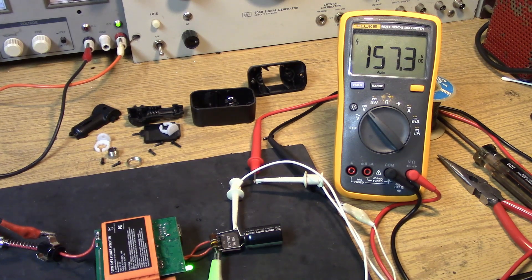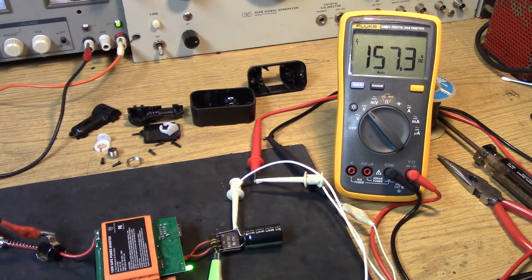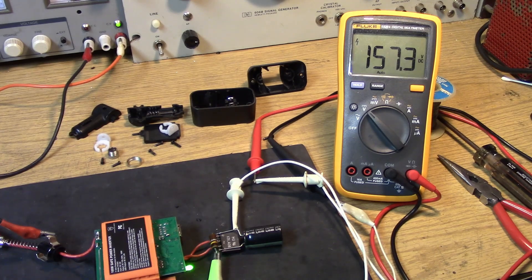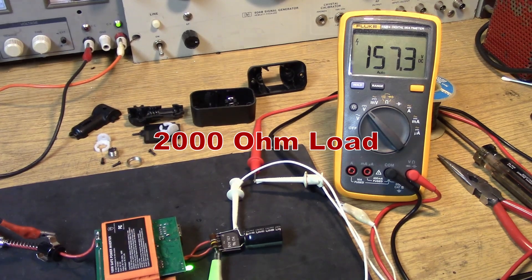So, the thing I'm interested in, though, is not that we have 157 volts. It's what happens when we put a load on that output. Will it remain at 157? Or will the regulation be so poor that I need to take steps? So, the next thing I'm going to do is, changing nothing, I'm simply going to put a load on here and see how stable the output voltage is.